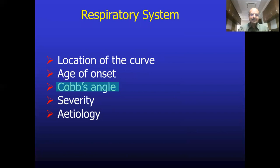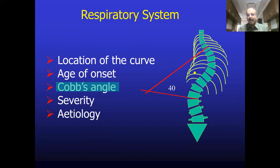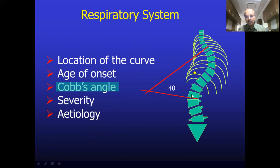The next important thing to know is the Cobb's angle. The Spine Research Society brought in categorization of scoliosis and the need for correction based on this angle. It is important that postgraduate students know what the Cobb's angle means. You identify the lateral curvature of the spine, draw a perpendicular from the last vertebral body in the curve, then draw a perpendicular from the topmost tilted vertebral body. The angle where these two perpendiculars intersect is called the Cobb's angle.